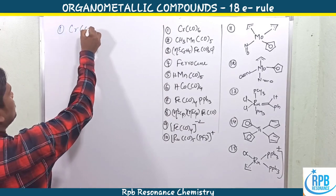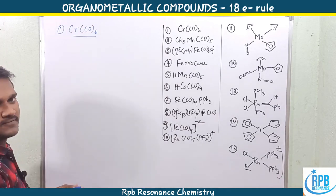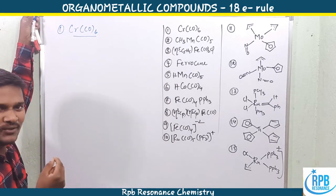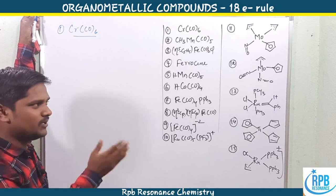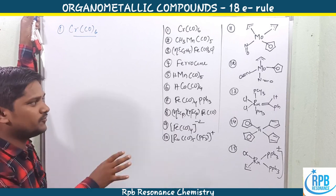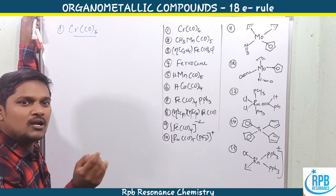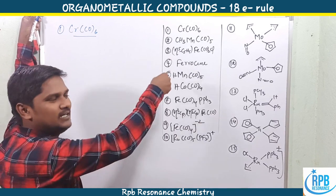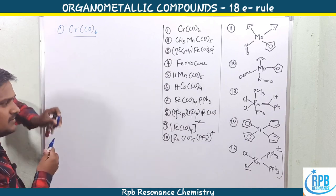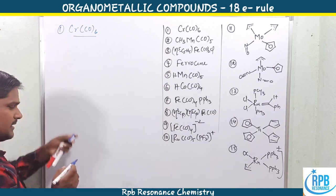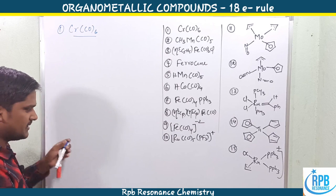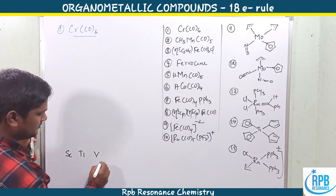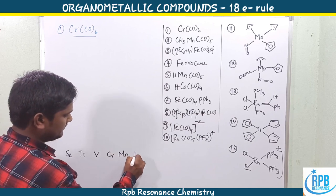Before going to the 18 electron rule calculation, we need to understand the electron count method. In the previous video I uploaded, we covered electron counting in ligands, but we also need to know the valence electrons in d-transition metals. Now I'll give very simple examples regarding the transition metals: scandium, titanium, vanadium, chromium, manganese, iron,